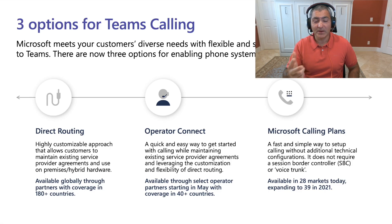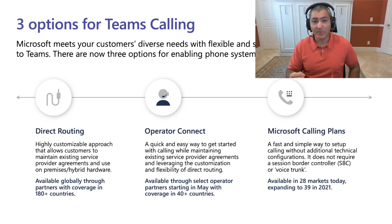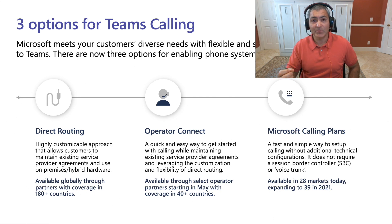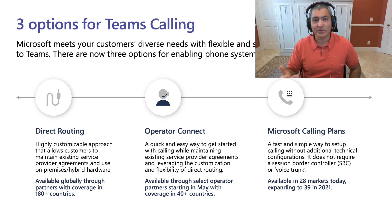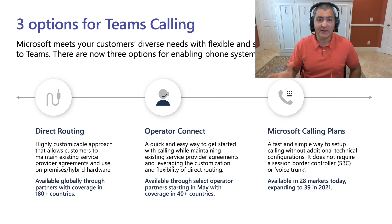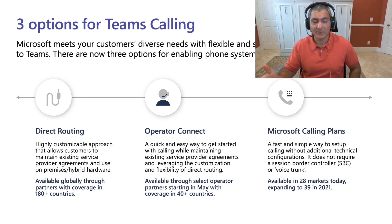To get a phone number, we have three different ways that you can connect to Microsoft Teams. You can get phone numbers from Microsoft. You can get phone numbers using a technology called direct routing, which has been around for many years and allows you to bring your carrier of choice and connect to Microsoft Teams. Or you can use something called operator connect, which was recently announced. It's very similar to direct routing in that you can bring your own carrier, but it's much more streamlined in the Teams admin center interface, with better peering, quality guarantees, SLAs, and support.